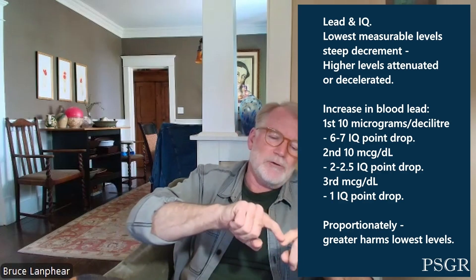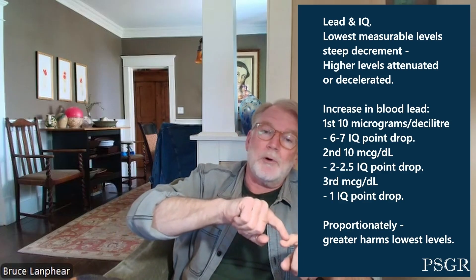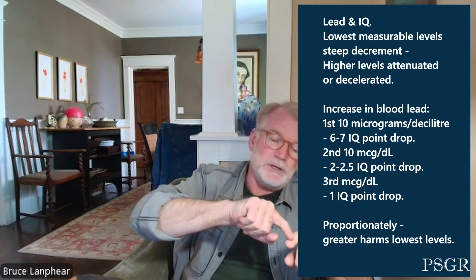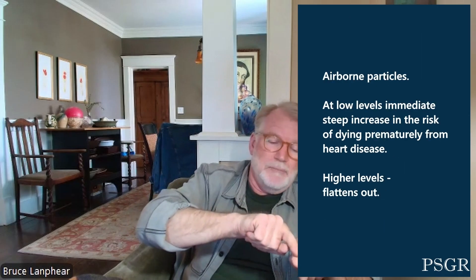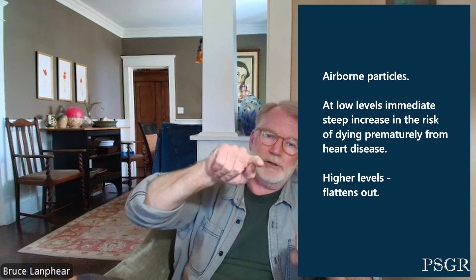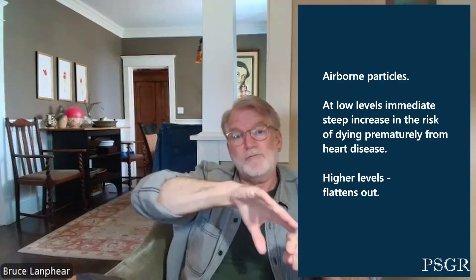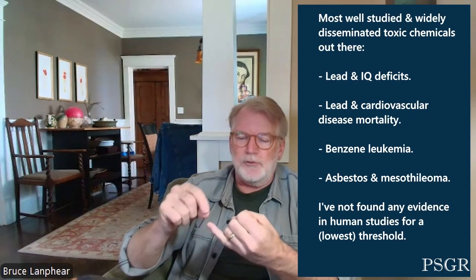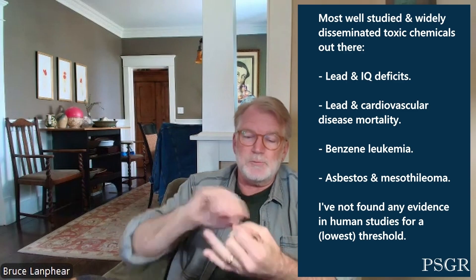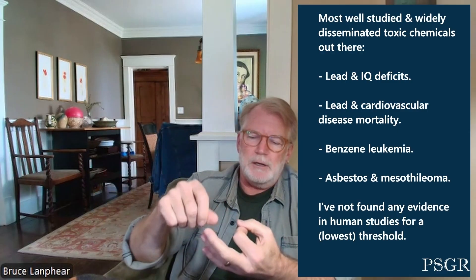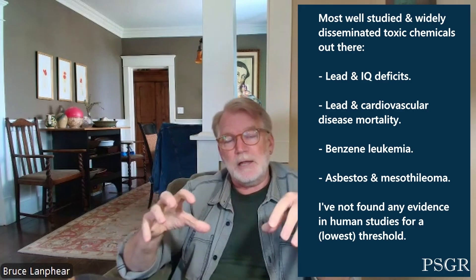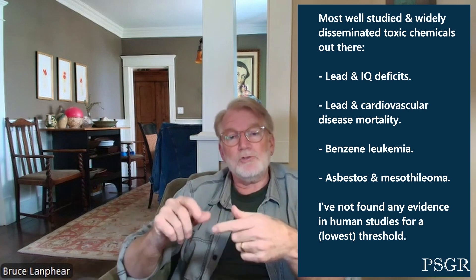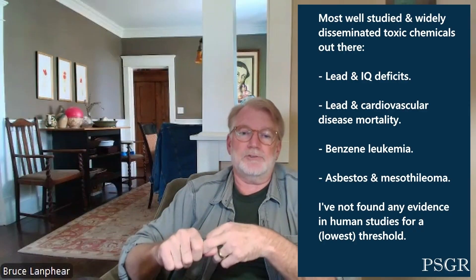We can see the same pattern with something like airborne particles — PM 2.5 — and death from cardiovascular disease, but here it's almost the mirror image: at low levels we see immediately a steep increase in the risk of dying prematurely from heart disease, and then at higher levels it decelerates or flattens out. This pattern has been seen for lead and IQ deficits, lead and cardiovascular disease mortality, PM 2.5 and mortality, benzene and leukemia, and asbestos and mesothelioma — and what those have in common is they are the most well-studied and widely disseminated toxic chemicals.